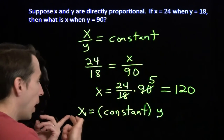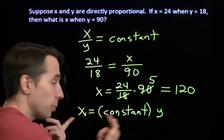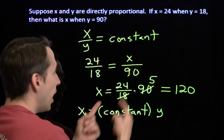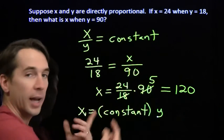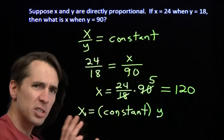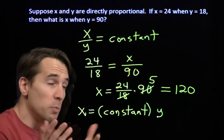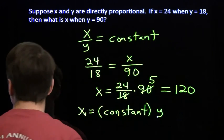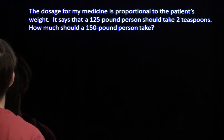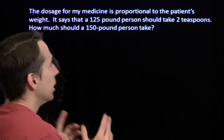I double y, I double x. I triple y, I triple x. I multiply y by 5, I multiply x by 5 as well. So this is the proportionality you may already be used to, and it's also a particularly useful proportionality.